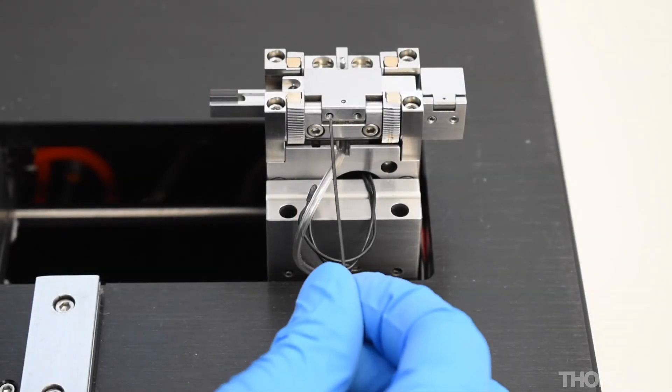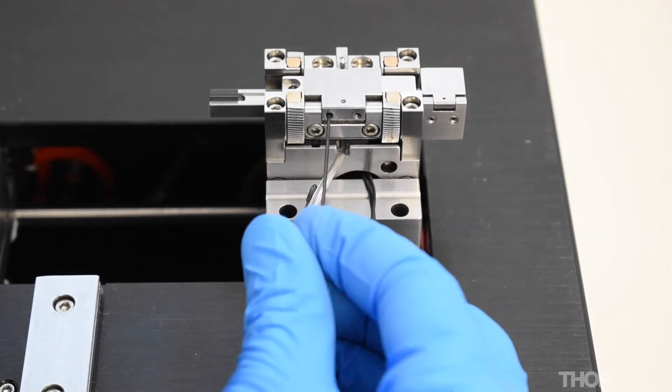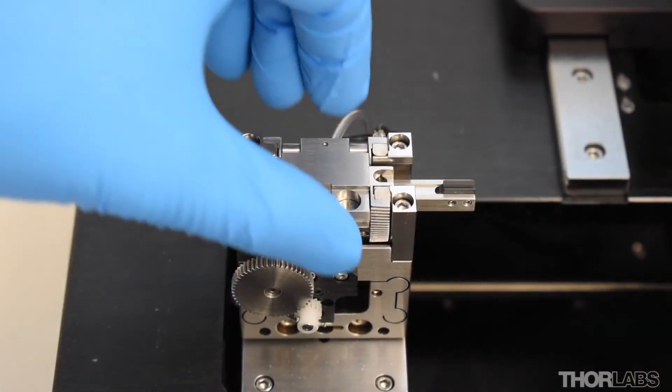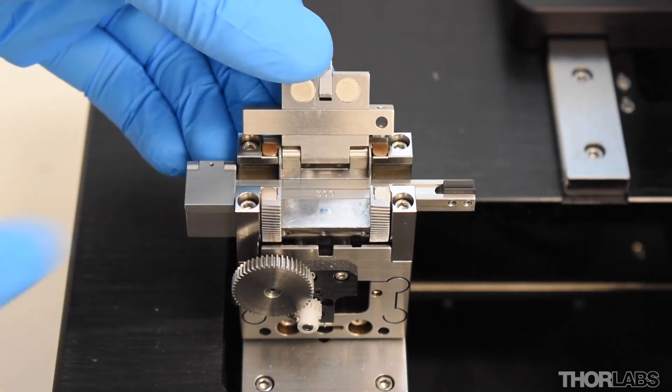Now tighten the two set screws on the rear of the lid to secure the upper insert in place. Once the insert is locked in place, open the lid.